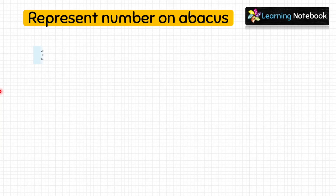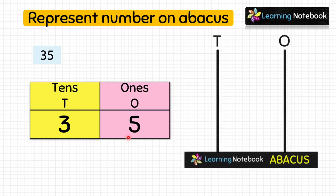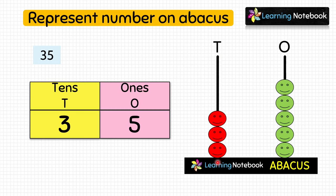Next let's represent 35 on the abacus. We have 5 at the ones place and 3 at the tens place. So let's put 5 beads at the ones place: 1, 2, 3, 4, 5. And 3 beads at the tens place. So we have represented 35 on the abacus.